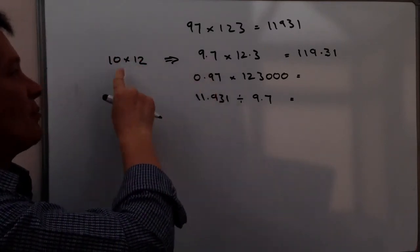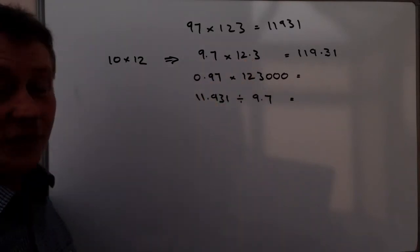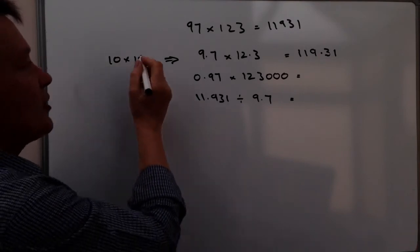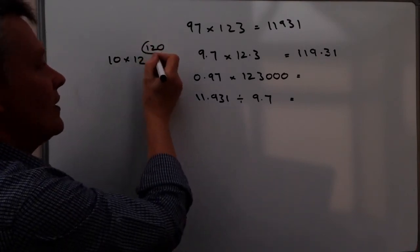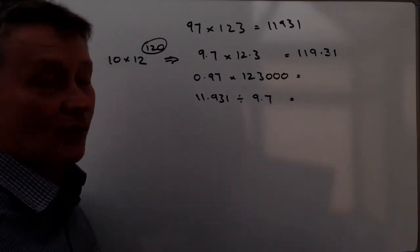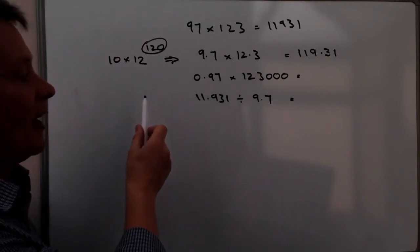And really the whole exercise is to determine where the decimal point will fall. Don't worry too much about the individual numbers themselves. What I mean by that is that this 9.7, this 12.3 is pretty close to 10 times 12, isn't it? So 9.7 is pretty close to 10 and 12.3 is pretty close to 12. 10 times 12 is actually 120. So I'd be expecting my answer to be very close to 120, and 119.31, there you go, it's not too bad.